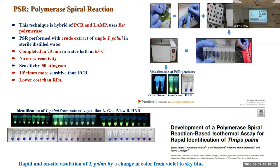LAMP generally uses four sets of primers, but a known drawback is that it gives false positives. To address these issues, we developed a PSR-based technology that uses BST polymerase, the same polymerase used in LAMP, which is not as costly as normal Taq polymerase. The rest of the procedure was similar to RPA: we collected the insect sample, heated it at 98 degrees Celsius for two minutes to extract DNA, then performed PSR at 65 degrees Celsius for 70 minutes.